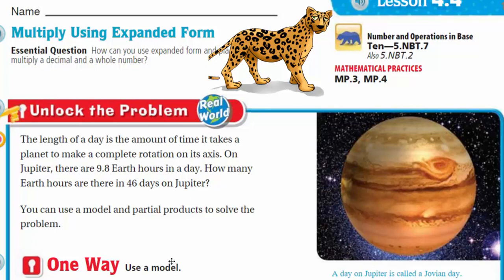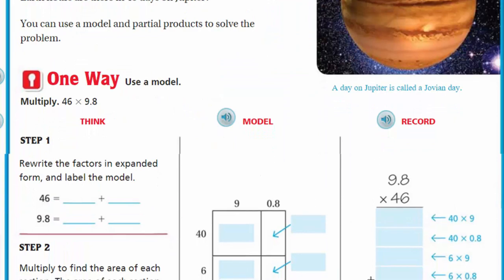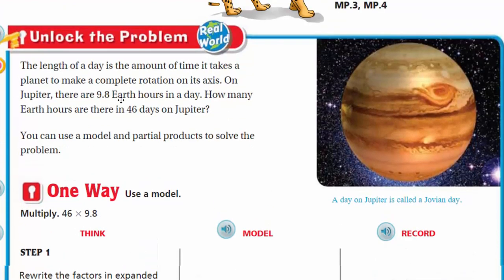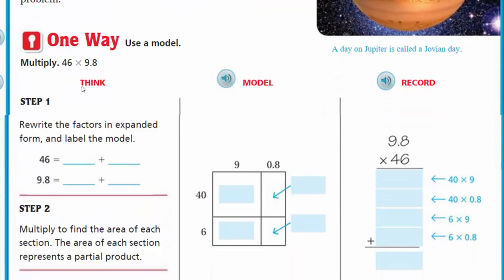Let's get to the problem here. It says we can multiply the number of days by the number of hours it takes Jupiter to do that. We want to know how many Earth hours are there in 46 days on Jupiter. Probably the first thing we do want to look at is a factor. We have two factors here. We're going to rewrite step one.